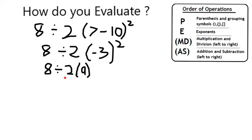So now I have 8 divided by 2 times 9. In other words, I'm left with a multiplication and division, so I'm on this level. Between multiplication and division, I'm going to evaluate them left to right. So first, I'm going to divide 8 by 2, then I multiply my result by the 9.